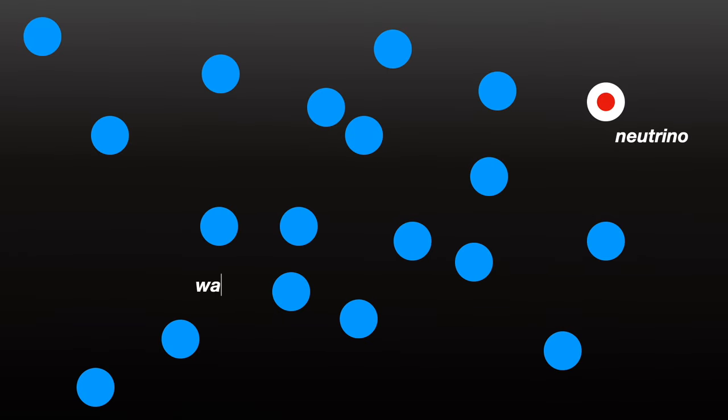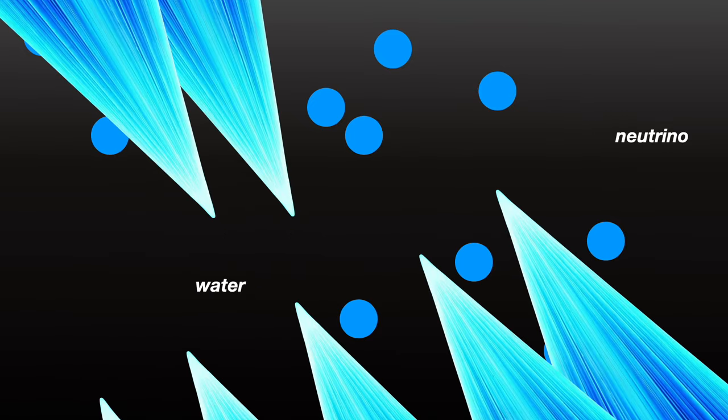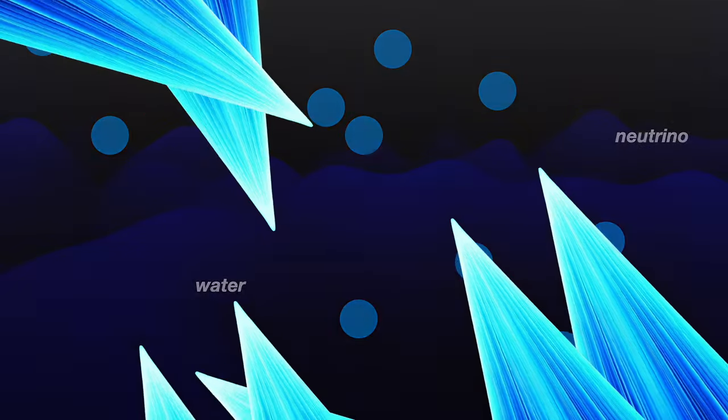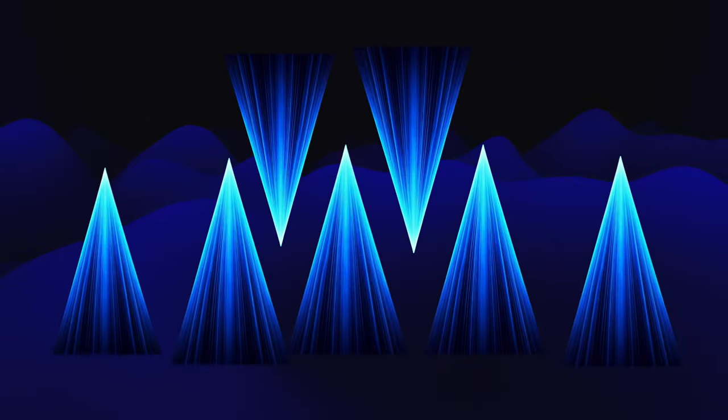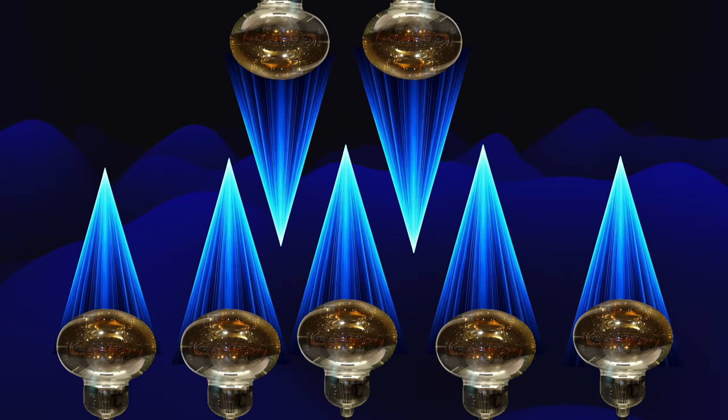The Super-Kamiokande detector uses water as a medium because when neutrinos, which are extremely light and elusive particles, pass through it and interact with the water molecules, they can create charged particles that move faster than the speed of light in water. The detector is lined with thousands of sensitive PMTs that capture this faint blue light.